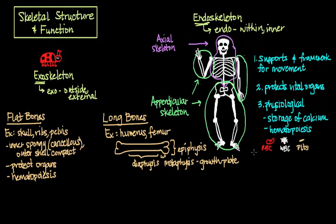These long bones really are the ones that provide a framework for movement, like we talked about before, and they also serve as a site of hematopoiesis. Speaking of hematopoiesis, where exactly does this hematopoiesis occur?